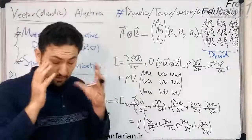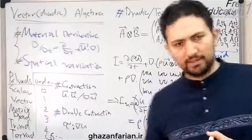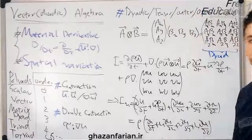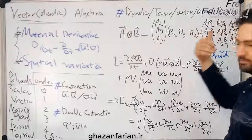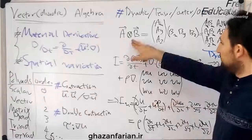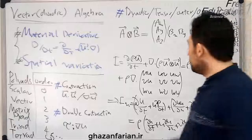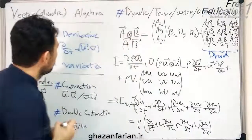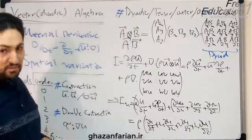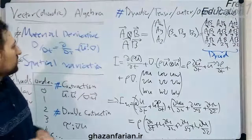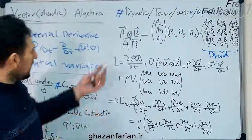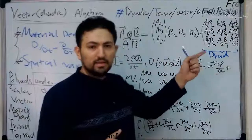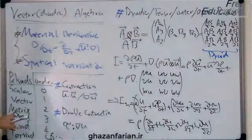There is another well-known product in tensor calculus and vector calculus called the dyadic product, or the tensor product, or the outer product, or the open product. We show this product with a circle with a cross in it, though sometimes nothing is written and the symbol is omitted — both notations are equivalent. The dyadic product of two vectors, a and b, produces a second-order tensor, or a matrix, also called a dyadic.